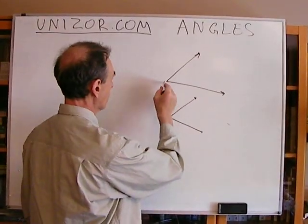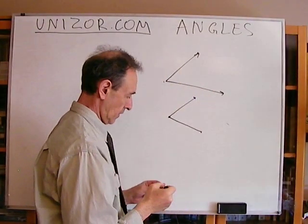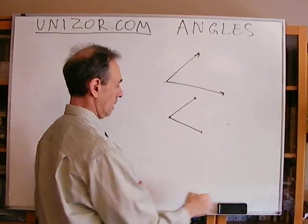Which have common vertex. So this is called vertex, and these are sides, sometimes legs, of the angle.